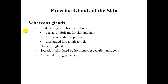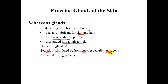Finally, we have the sebaceous glands. They produce an oily secretion called sebum, which is beneficial to both skin and hair and has bactericidal properties. Sebum is discharged into the hair follicle. Sebaceous glands are a type of holocrine gland, meaning the oil is produced within a cell, and then the cell lyses, releasing the oil into the ducts to be carried to the hair follicles. Secretion is stimulated by hormones, especially androgens such as testosterone and estrogen, and is activated during puberty.